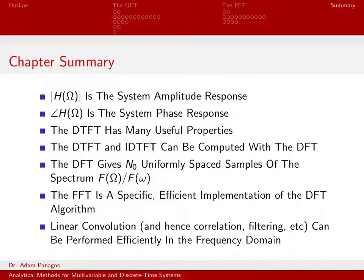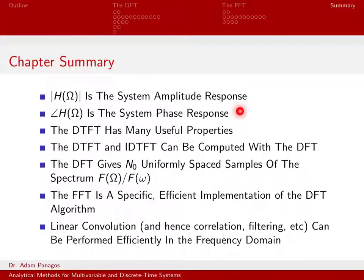The quantity H(ω) is what we call the frequency response of the system. It's typically complex, so we plot it two different ways. The magnitude of the frequency response is called the system amplitude response, and the angle of this complex quantity is called the phase response. By plotting the amplitude and phase response, we know how the system will change each frequency component coming into the system.